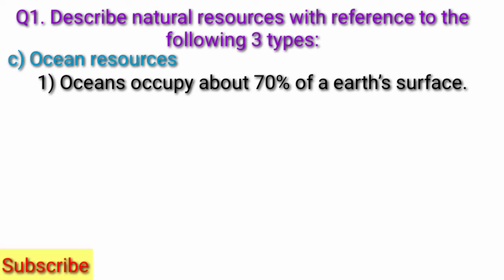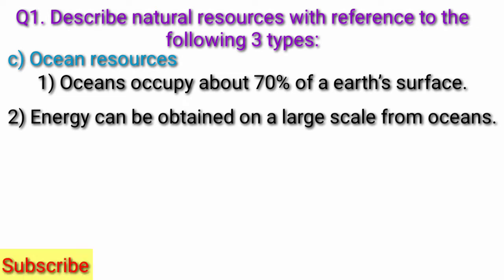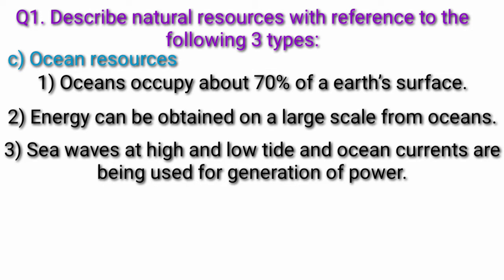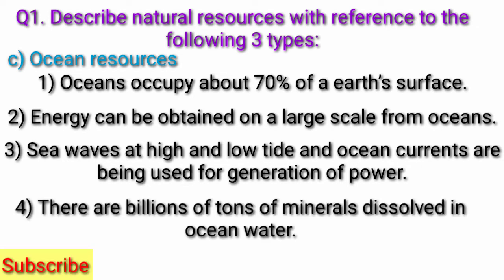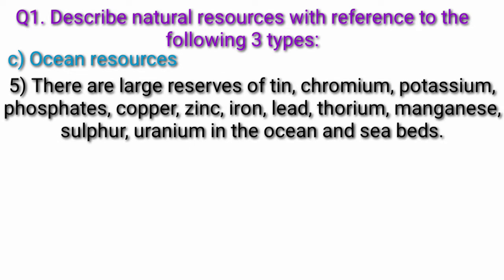Bamboo and wood are also used in the manufacture of rayon yarns and artificial silk fibers. Question c) Ocean Resources: Oceans occupy about 70 percent of earth's surface. Energy can be obtained on a large scale from oceans — sea waves at high and low tide and ocean currents are being used for generation of power. There are billions of tons of minerals dissolved in ocean water, including tin, chromium, potassium, phosphates, copper, zinc, and iron.